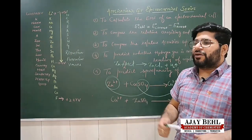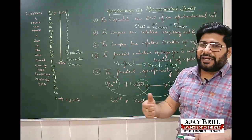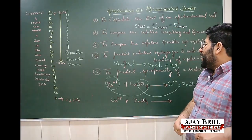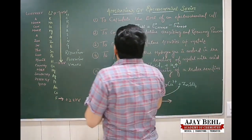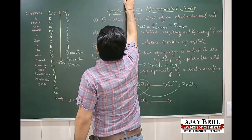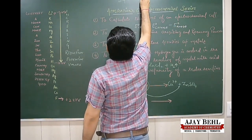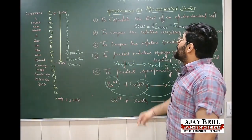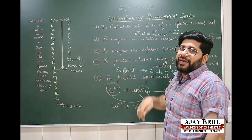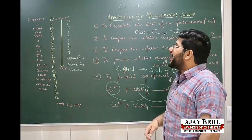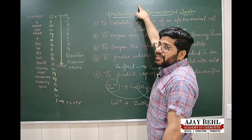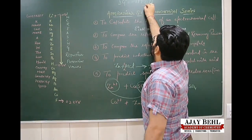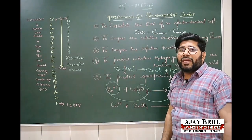If E⁰ of the cell comes out to be zero, that indicates equilibrium. We can justify this using the relation: ΔG⁰ = −nFE⁰(cell), where N is an integer and F is Faraday's constant (96500 coulombs). For the reaction to be spontaneous, ΔG⁰ must be negative, which requires E⁰ of the cell to be positive.